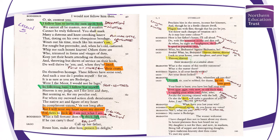Brabantio says, 'What is the reason for this terrible summons? What's the matter?' Roderigo asks if all his family are within and the doors locked. Iago says, 'For shame, put on your gown. Your heart is burst. You have lost half your soul. Even now, now, very now, an old black ram is tupping your white ewe.' There's so much here: the juxtaposition of black and white, the racism, the base language of 'tupping,' and the repetition of 'now' three times to incite panic.